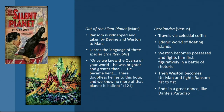Lewis read a lot of science fiction and at one point turned to his friend Tolkien and said, 'maybe we should write the kind of stories that we like to read.' Tolkien decided he was going to write a time travel epic and Lewis was going to write a space travel epic. Tolkien never finished his, but Lewis did. These two stories are the outpouring of that pact made between friends.